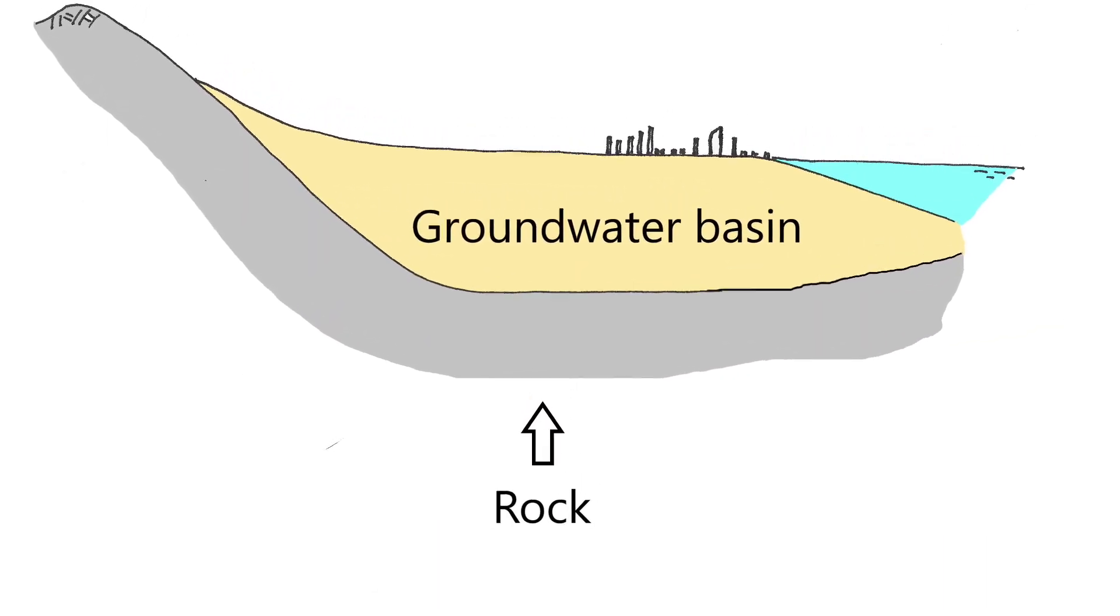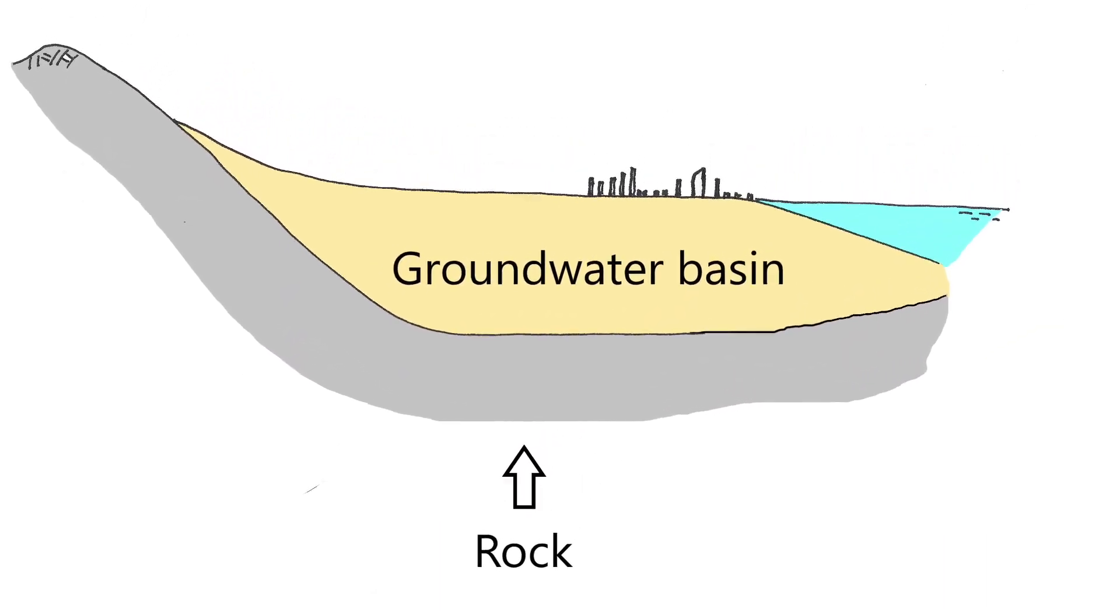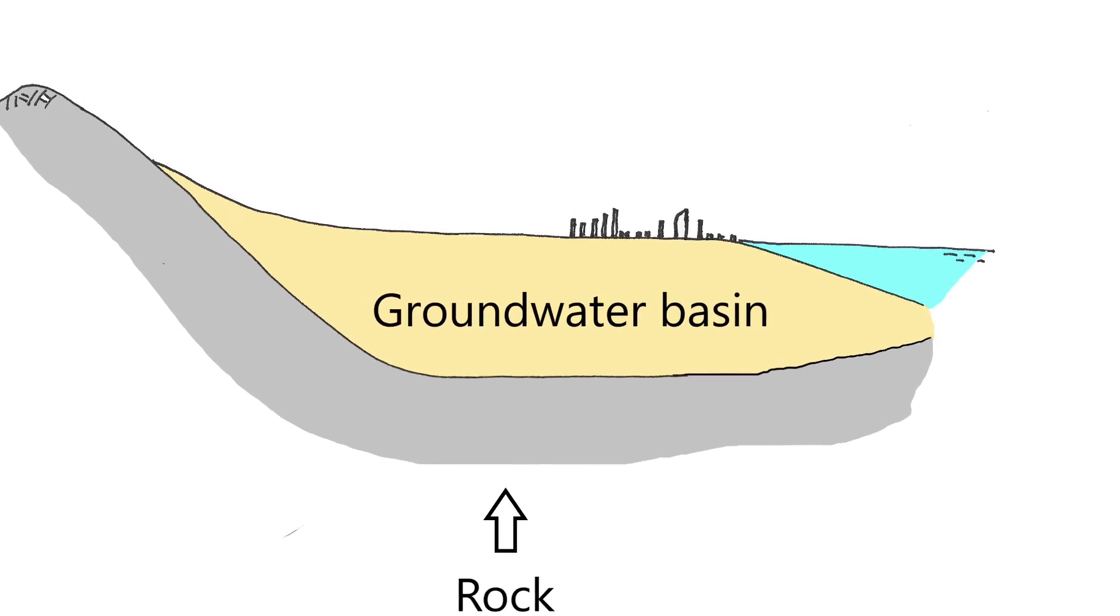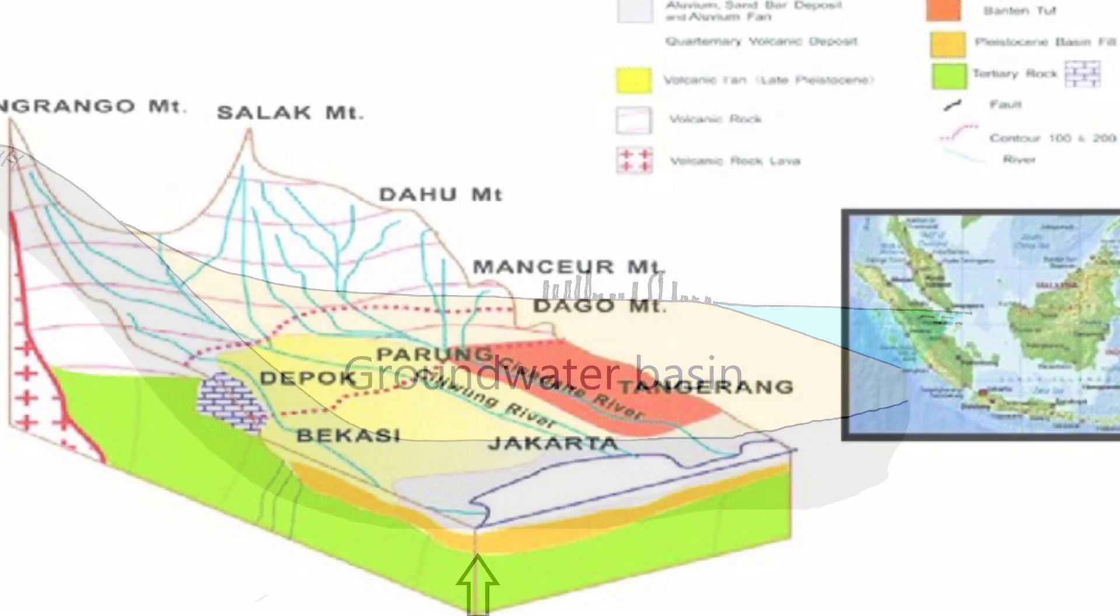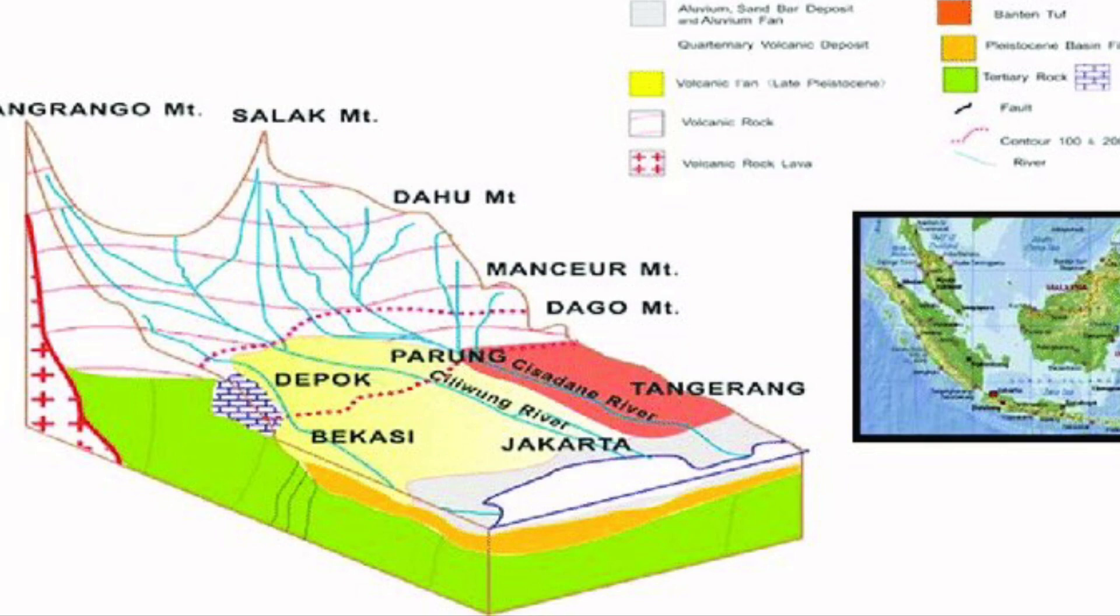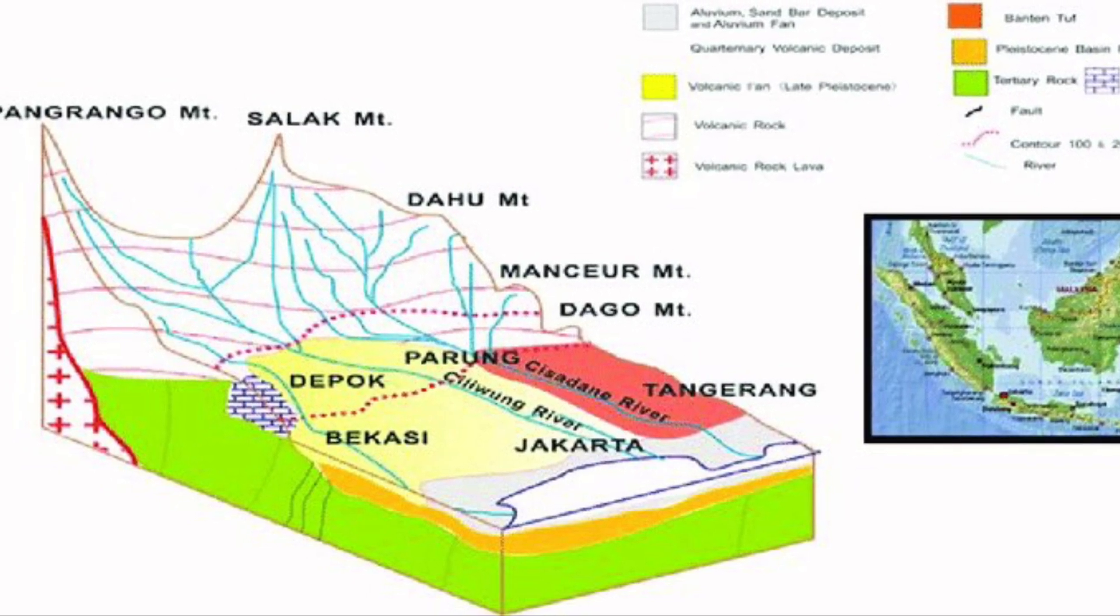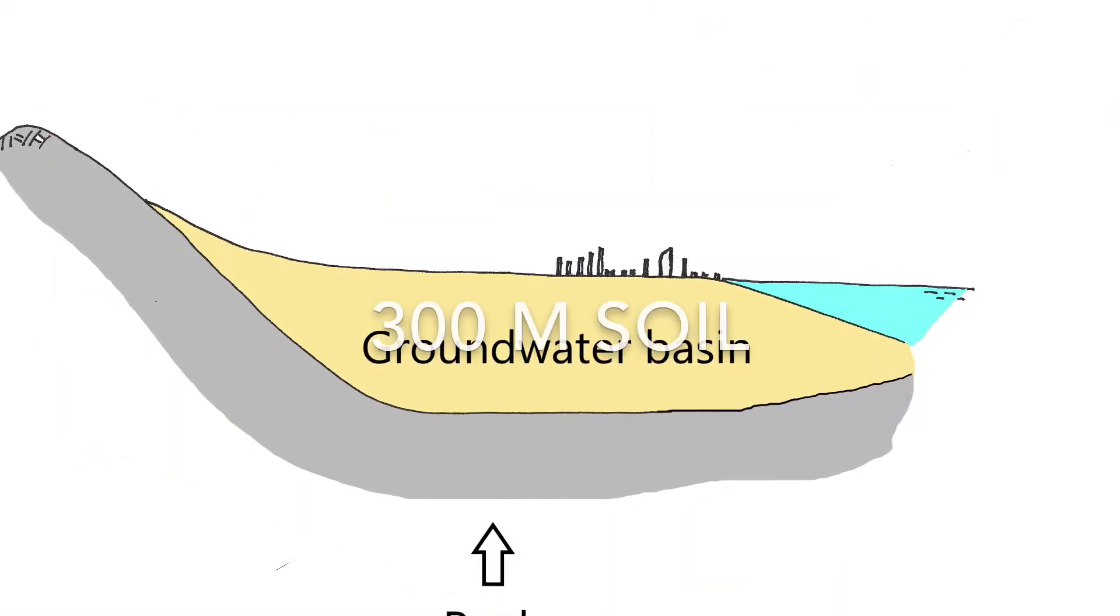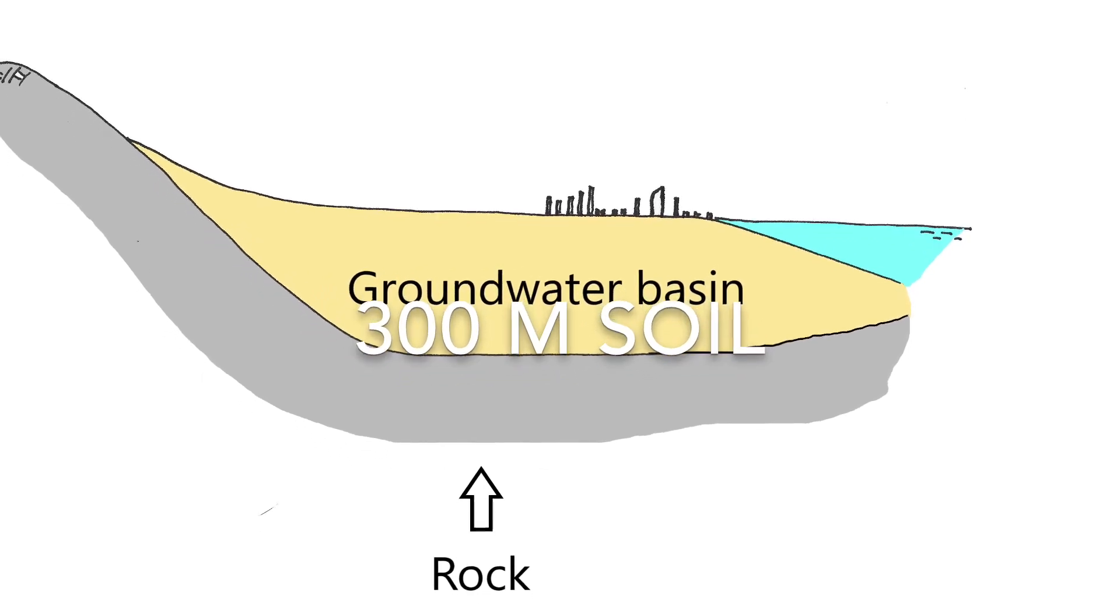Jakarta is located in what geologists call a basin, the Jakarta groundwater basin. A basin is a deepening in the terrain, and in the case of Jakarta, this deepening is filled with soil up to 300 meters thick and groundwater.